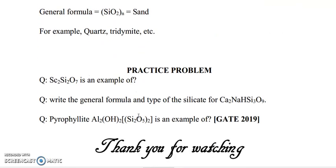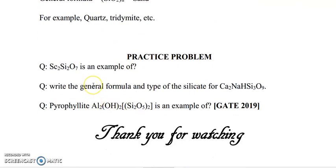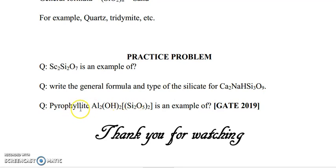I am giving you some problems based on the basic formula of silicate — please try to do them by yourself. First question: Sc₂Si₂O₇ — identify the name of the silicate using the basic formula. Next question: write the general formula and type of silicate for Ca₂NaHSi₃O₉. Next question: pyrophyllite Al₂(OH)₂Si₂O₅(OH)₂ — identify what type of silicate this is. This question comes from the GATE 2019 exam, so please keep your pen and try to do it yourself.